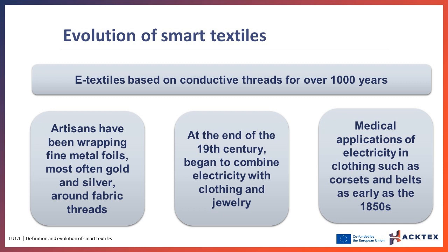More specifically, artisans have been wrapping fine metal foils, most often gold and silver, around fabric threads for many years. At the end of the 19th century, as people developed and grew accustomed to electric appliances, designers and engineers began to combine electricity with clothing and jewelry, developing a series of illuminated and motorized necklaces, hats, brooches, and costumes.